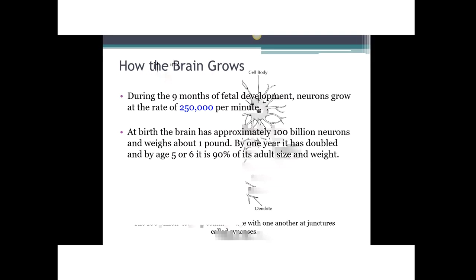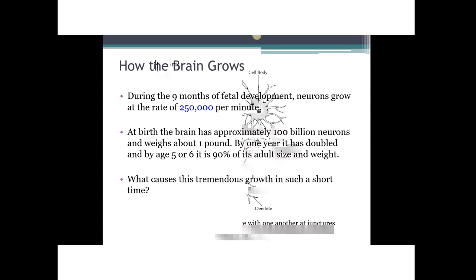Early brain growth is absolutely fascinating. During fetal development, neurons grow at the rate of 250,000 per minute, and the brain actually overproduces neurons before birth, then eliminates the less effective ones, leaving about 100 billion at birth. The brain weighs about a pound at birth; by our first birthday it has doubled in size, and by age five or six our brains are 90% of their adult size and weight. So what causes this tremendous growth in such a short time?